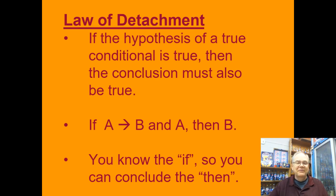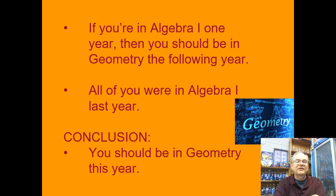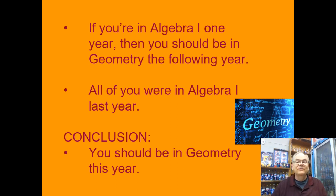Here's an example. If you're in Algebra 1 this year, then you should be in Geometry the following year. And you guys were all in Algebra 1 last year. So you should be able to conclude that you should be in Geometry this year. I know the 'if' part happened, so therefore the 'then' part has to happen too. If the first part, then the second — we know the first part, so we conclude the second.